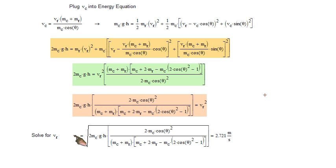And we get that VR equals 2.721 meters per second. Or in the English system, VR equals 8.928 feet per second. So this is the answer to the first part.